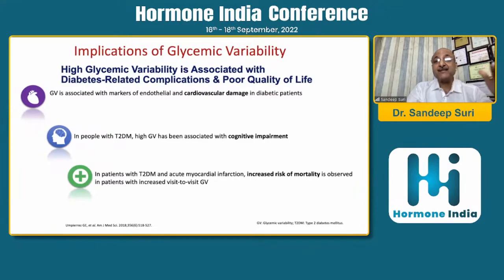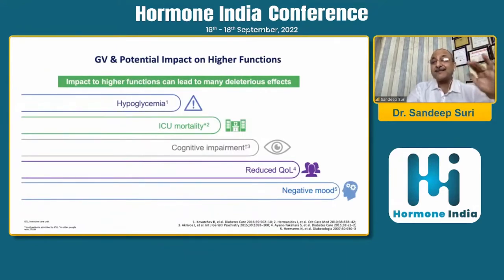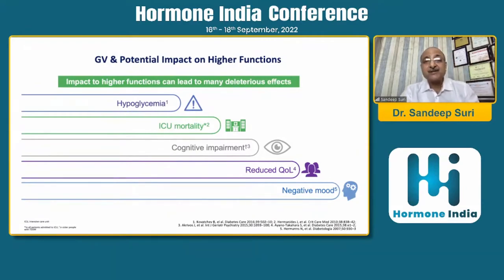Frequent or large glucose fluctuations may independently contribute to diabetic complications and have more deleterious effects than sustained hyperglycemia. Consequences of glycemic variability include cognitive impairment, cardiovascular damage, arrhythmogenicity, QTc prolongation leading to increased mortality, and increased ICU mortality. Glycemic variability also increases hypoglycemia - both the amount, duration, and number of hypoglycemic episodes get increased.